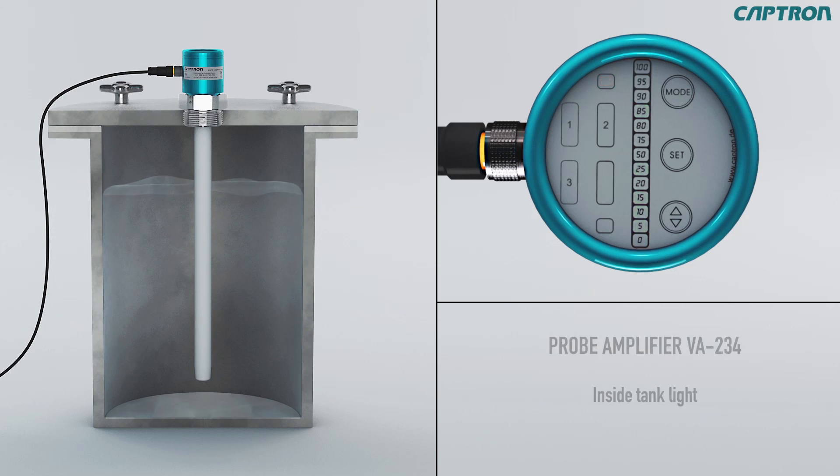Optionally, there is lighting available for the inside of the tank of the probe amplifier VA234. To turn on the LEDs, just touch the set button in measuring mode. The lighting shuts off automatically after 15 seconds to avoid overheating, and can be turned on again after waiting 5 seconds.